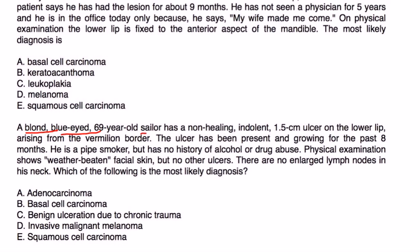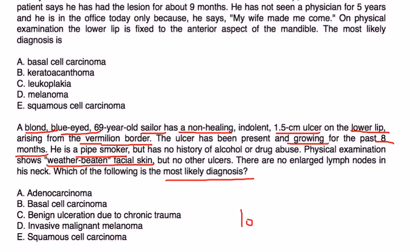A blonde, blue-eyed, 69-year-old sailor has a non-healing, indolent 1.5-centimeter ulcer on the lower lip, arising from the vermilion border. The ulcer has been present and growing for the past eight months. He is a pipe smoker but has no history of alcohol or drug abuse. Physical exam shows weather-beaten facial skin but no other ulcers, and no enlarged lymph nodes in his neck. The location of the skin lesion and the history are classic for squamous cell carcinoma. He is a sailor with weather-beaten facial skin, implying he spends a lot of time in the sun.